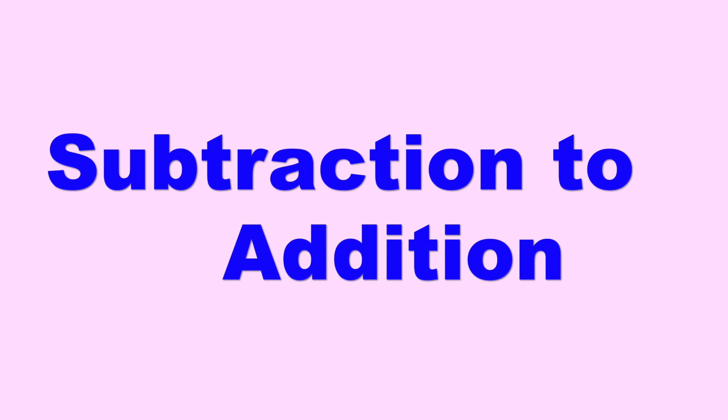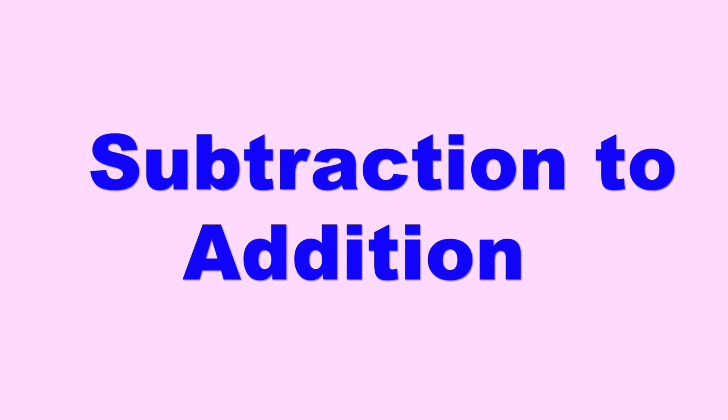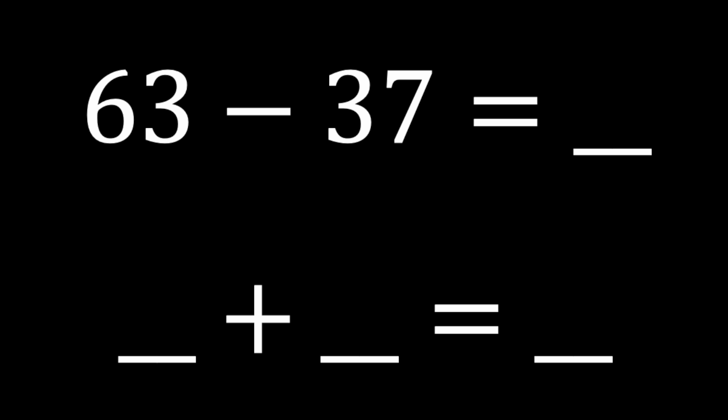First, we change the subtraction sentence to an addition sentence. 63 minus 37 equals blank. We're going to take the minuend, 63, to the end of our addition sentence. It becomes the sum. So something plus something equals 63. We're going to take our subtrahend and make it our first addend. 37 plus something gives us 63.